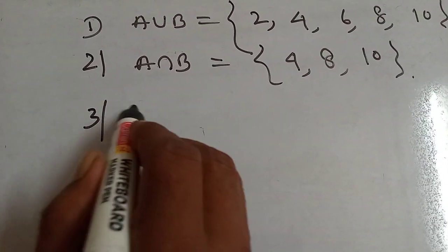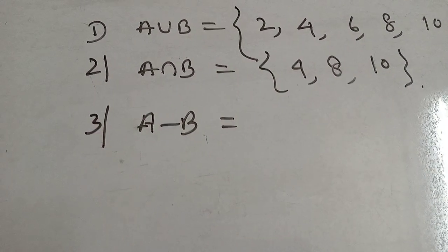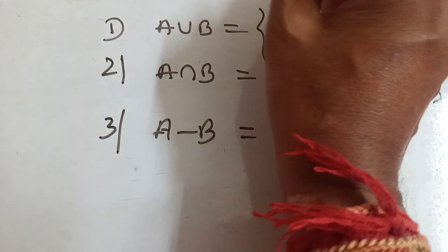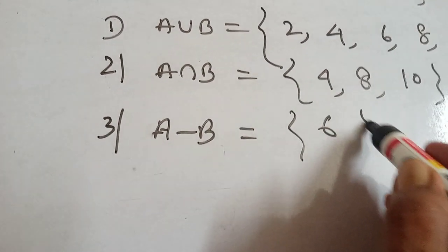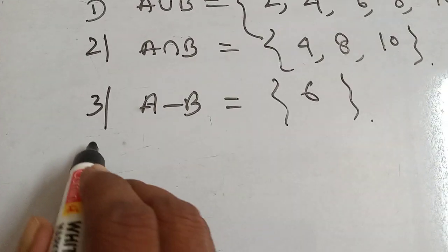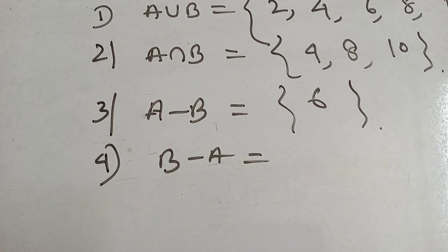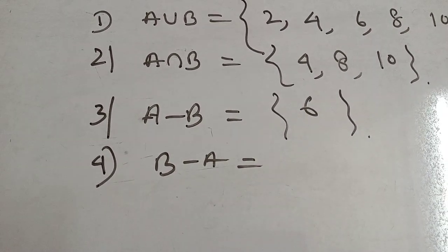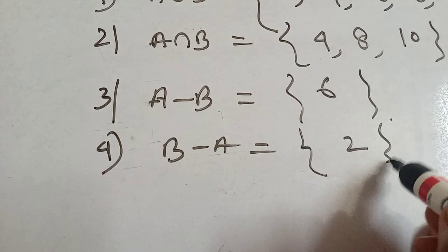Third, A minus B — contained in A but not in B. A = {4, 6, 8, 10} and B contains 4, 8, 10, so removing those leaves only 6. So A minus B = {6}. Fourth, B minus A — contained in B but not in A. B = {2, 4, 8, 10}; removing 4, 8, 10 leaves only 2. So B minus A = {2}.